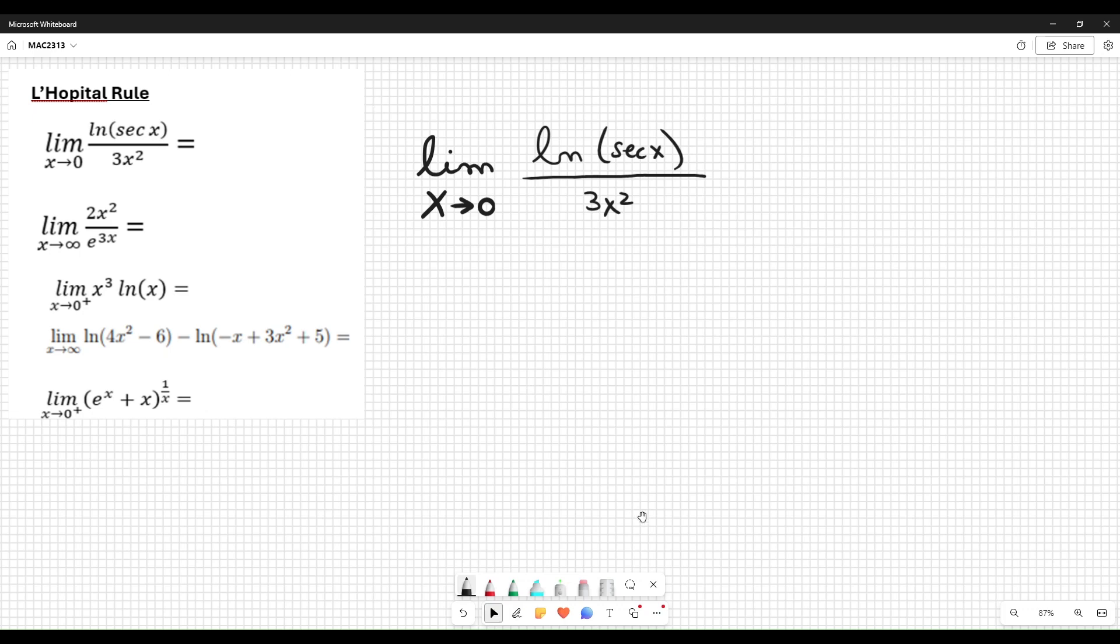Okay, now let's look at the rule. As always, when you want to evaluate the limit, you plug it in. Logarithm of secant 0 divided by 3 times 0 squared. Secant 0 is 1. Logarithm of 1 is 0 over 0.